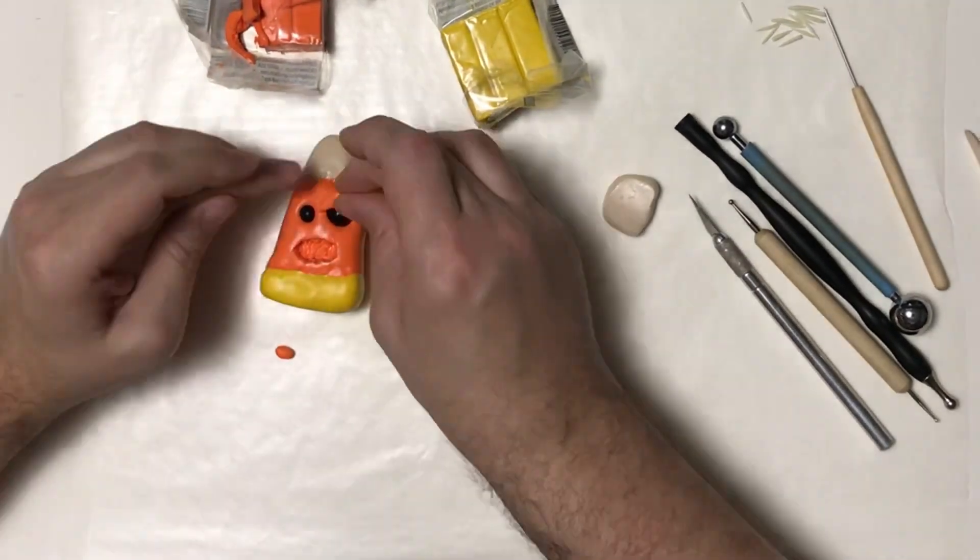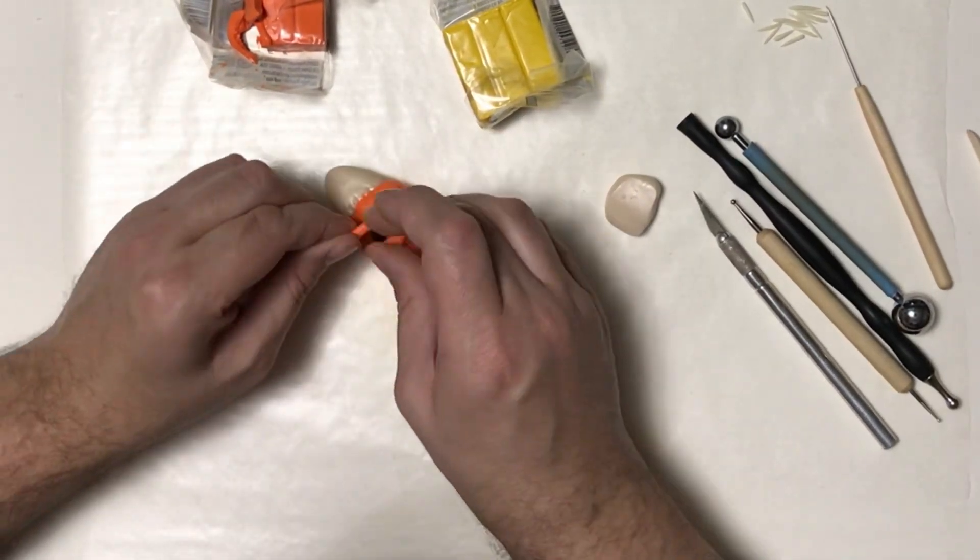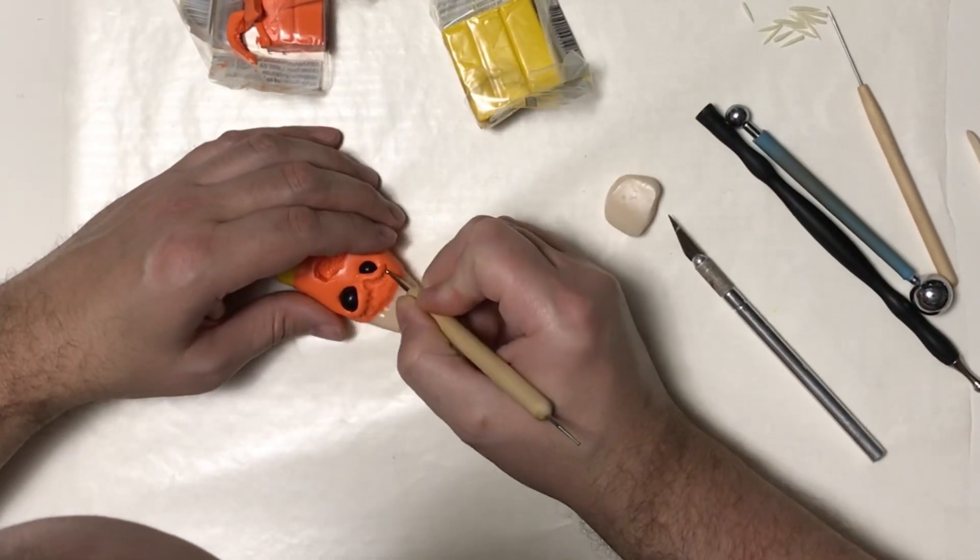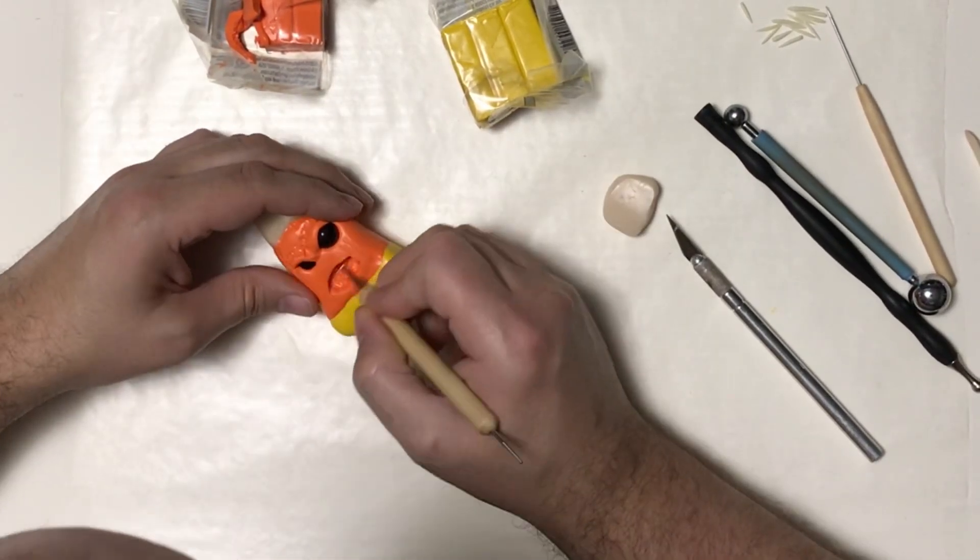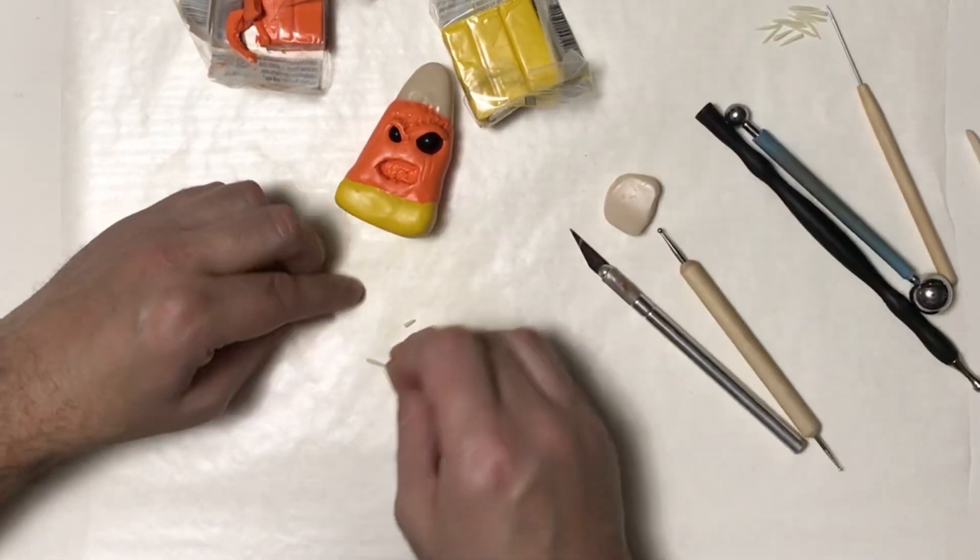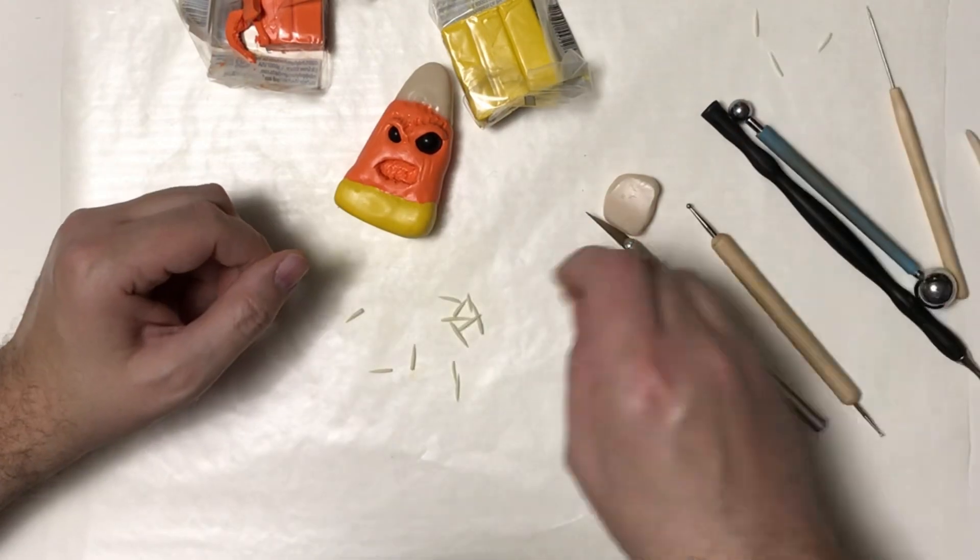Now I can start building up his eyebrows. I want them to look all evil. So I put a little bit of clay over the top of those two black beads for the eyes, and now I'm going to start adding the teeth.